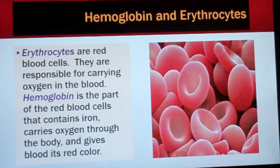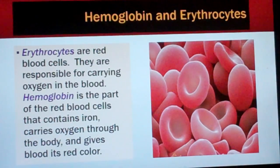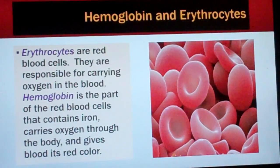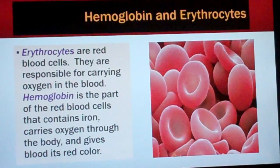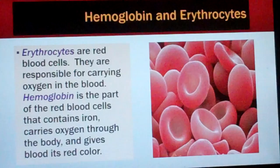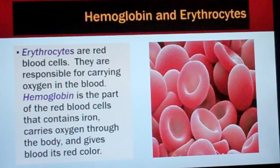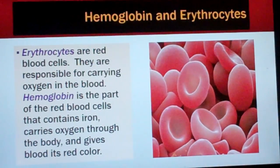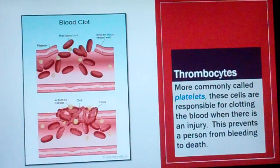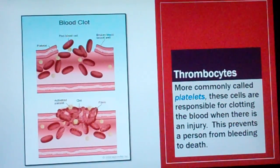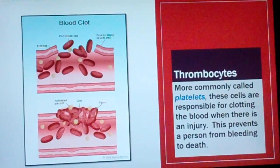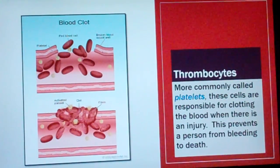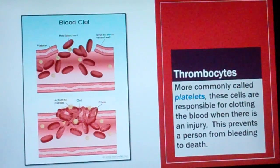Erythrocytes are red blood cells responsible for carrying oxygen in the blood. Hemoglobin is the part of the red blood cell that contains iron, carries oxygen through the body, and gives blood its red color. Thrombocytes, more commonly called platelets, are cells responsible for clotting the blood when there is an injury, preventing a person from bleeding to death.